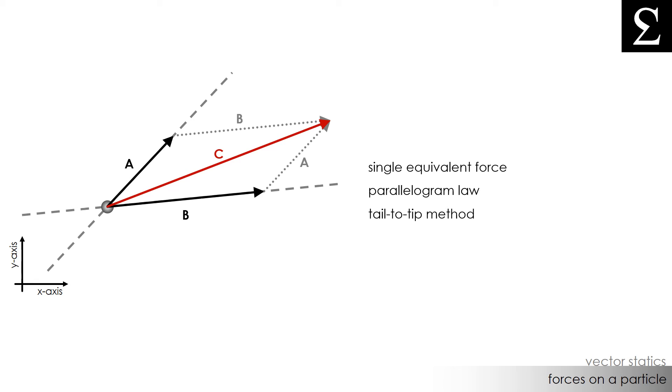Since this is a graphical method, we would need to draw out the force vectors, their lengths, their direction, and their sense to find the resultant force. And this resultant force C would move the particle the same way that forces A and B originally did.